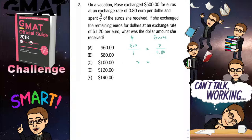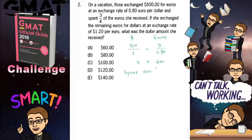That's essentially just 400. 0.80 is basically four-fifths, and four-fifths of 500 is 400. So Rose exchanged $500 for 400 euros. Then she spent three-fourths of what she received — 400 times three-fourths gives you 300 euros. So she spent 300 euros.